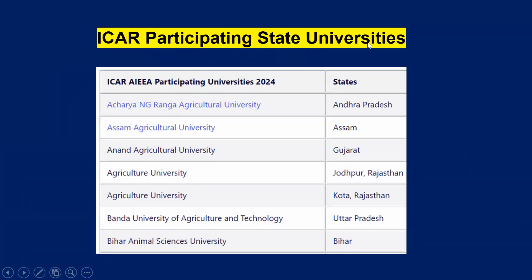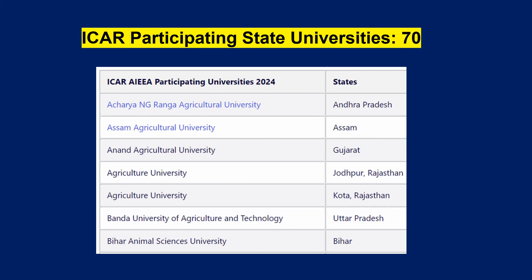Next, ICAR participating state universities. Based on the CUET entrance examination score, you will also get admission into ICAR state universities. You can see the list of state universities which are participating through the CUET entrance examination. The first one is Acharya NG Ranga Agricultural University, Andhra Pradesh. From India, totally 70 state universities are accepting the CUET entrance score to get admission into ICAR courses.